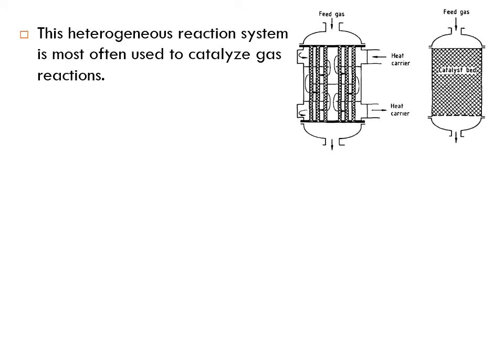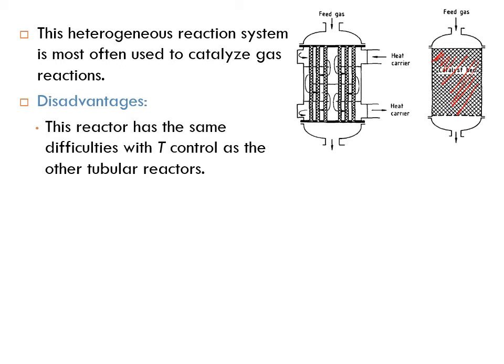Heterogeneous reactions in packed beds are most often used to catalyze gas reactions. If you need to run a gas phase reaction with a catalyst, the catalyst is likely a solid packed inside the reactor tubes or the reactor shell. The disadvantage is the same temperature control difficulty as other tubular reactors: high concentration at the inlet means a high rate of reaction, high heat release, and a potential hot spot at the beginning of the reactor.